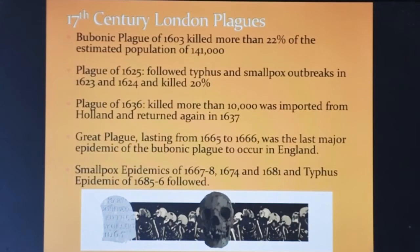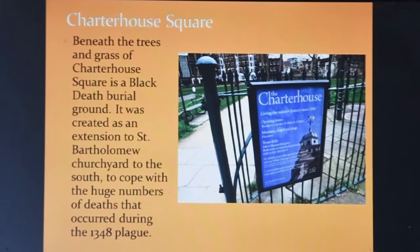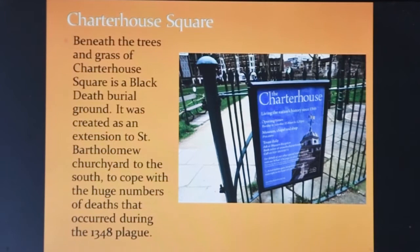So you can see 17th century London was frequently dealing with these scourges. So many bodies piled up in London that they had to be buried in mass graves, which were nothing more than large open pits where the bodies were stacked one upon the other. Those bodies remain today under the trees and grass of Charterhouse Square in London, near St. Bartholomew's Churchyard.